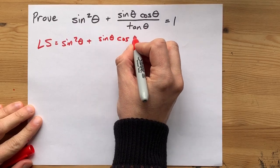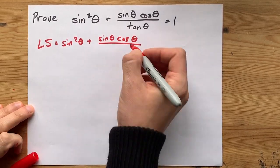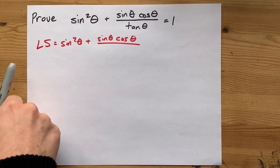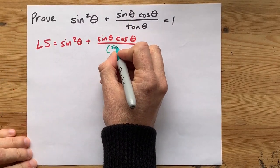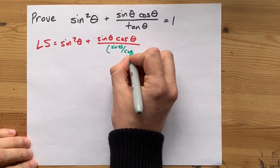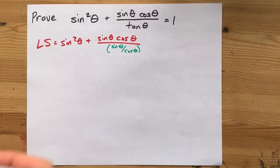Well, the first step is to know what dividing by tan actually means. Tan is always the same as sine over cos. So I'm going to rewrite it as sine over cos right there.